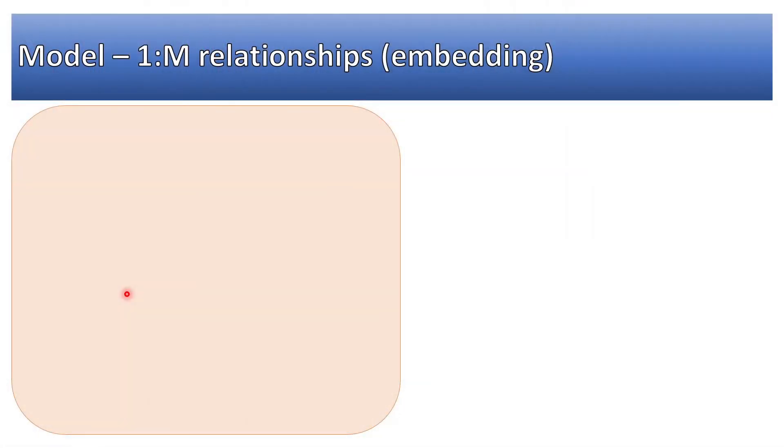How to model one-to-many relationships when it comes to embedding? It follows the same principle as in one-to-one relationships of embedding.